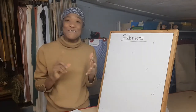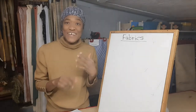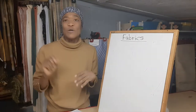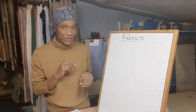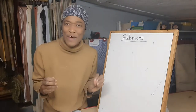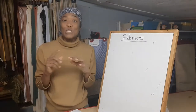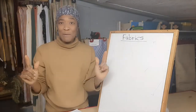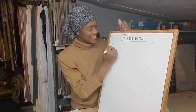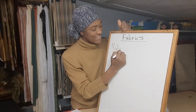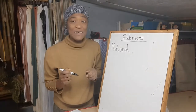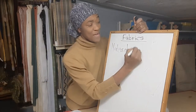In the last lesson we looked at screen printed, yarn dyed, and piece dyed fabrics — I can link it for you so if you have not seen the video you can check it out. We will look at types of fabrics. There are two main types: fabrics that are made from natural fibers, and fabrics that are made from man-made fibers.